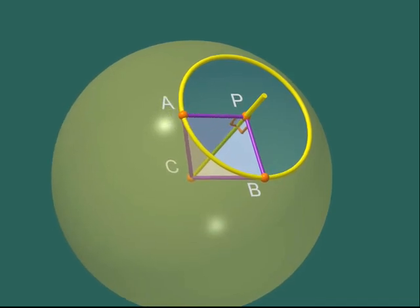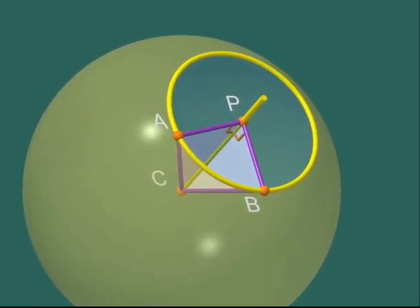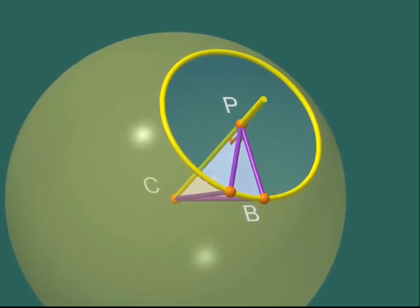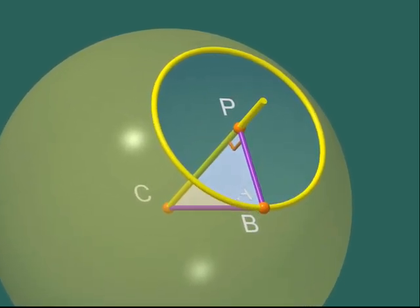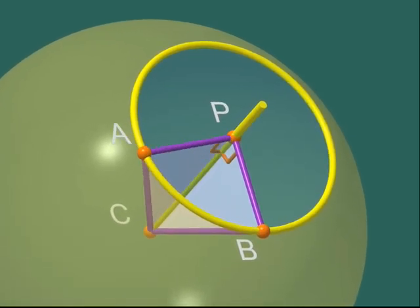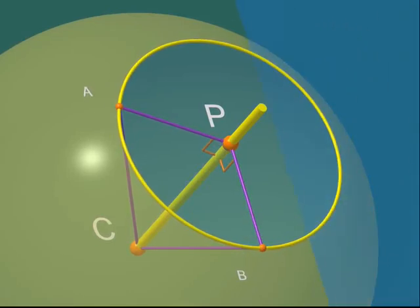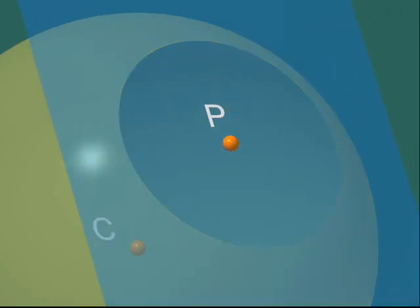Therefore, we have proved that all points which are both on the sphere and the plane belong to some circle. Does that imply that all points on this circle are on the sphere and on the plane? A priori, no. We still have to prove it.